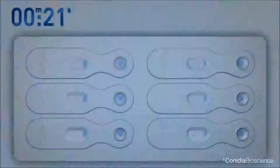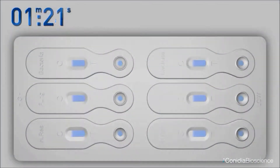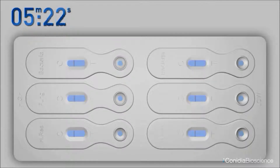Where two or more test lines are not visible on the right side of the test paddle, this would indicate a high positive or heavy contamination.